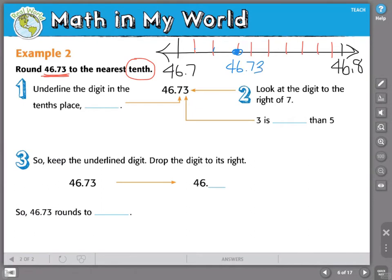So I can do that also by underlining the digit in the tenths place. That would be my 7. Then my next step is to look to the number to the right. This is the 3. And think, is that less than 5 or greater than 5? 3 is less than 5. If it's less than 5, then we'll keep the underlined digit. That would be a 7. And drop all the digits to its right. So 46.73 would round to 46.7.